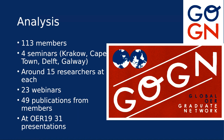This is probably slightly out of date — we have probably about 120 members now. We've run four seminars from Krakow, Cape Town, Delft, and Galway. We bring about 15 researchers to each. We've hosted about 25 to 26 webinars now and have quite a lot of publications from members. Going through the programme of OER19 last year, there were 31 sessions from GoGN members, which demonstrates a certain maturity and growth in the network.